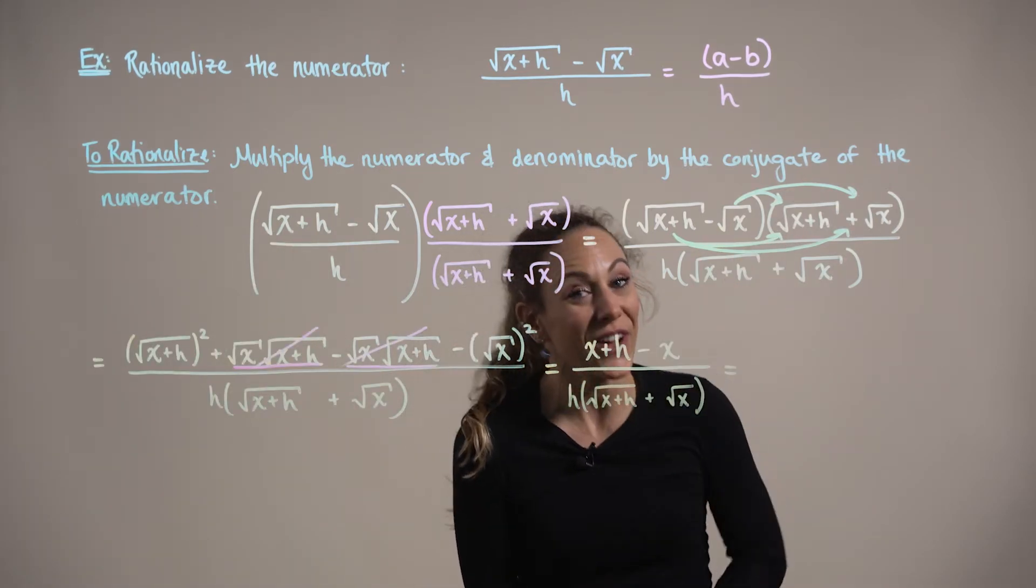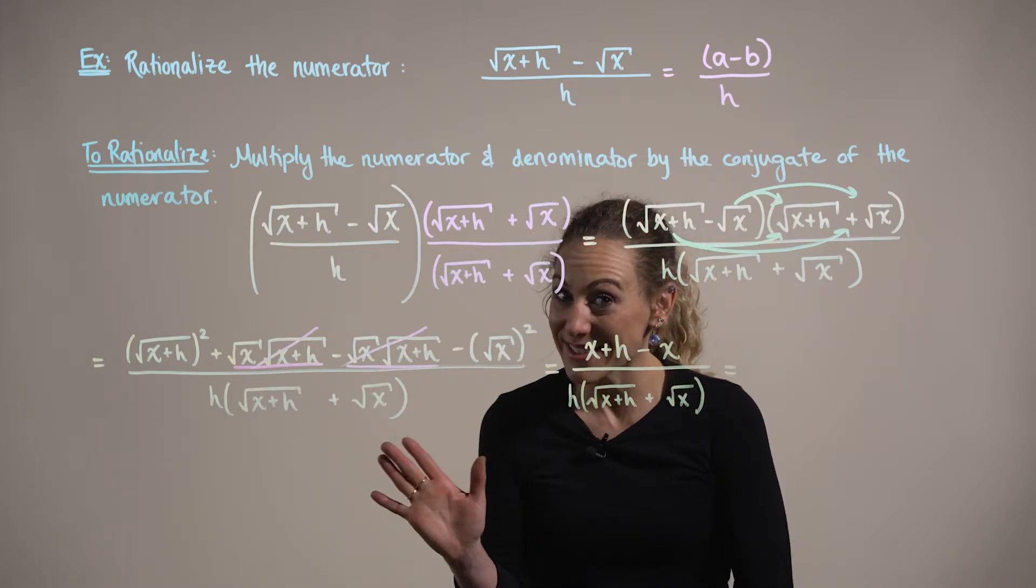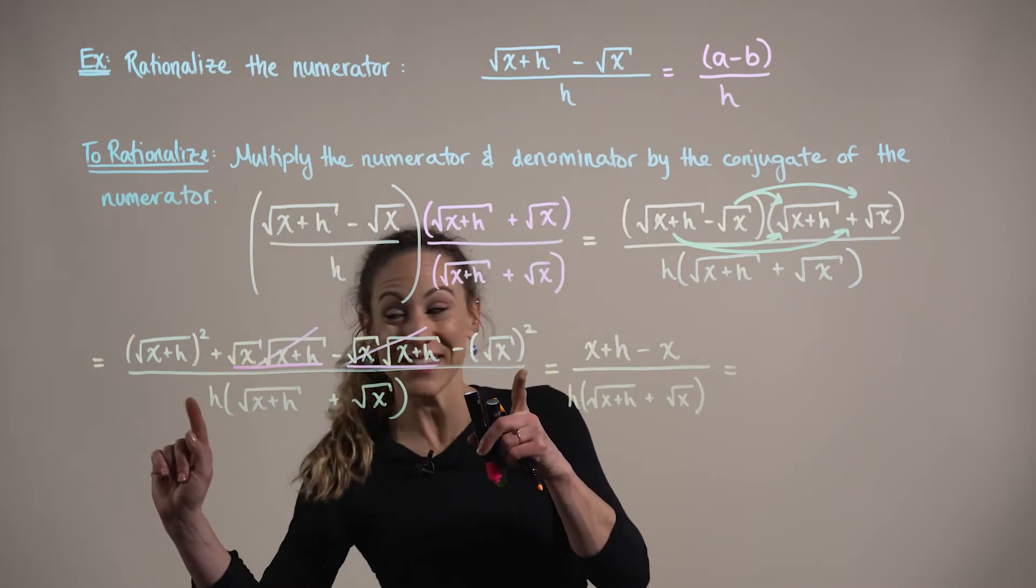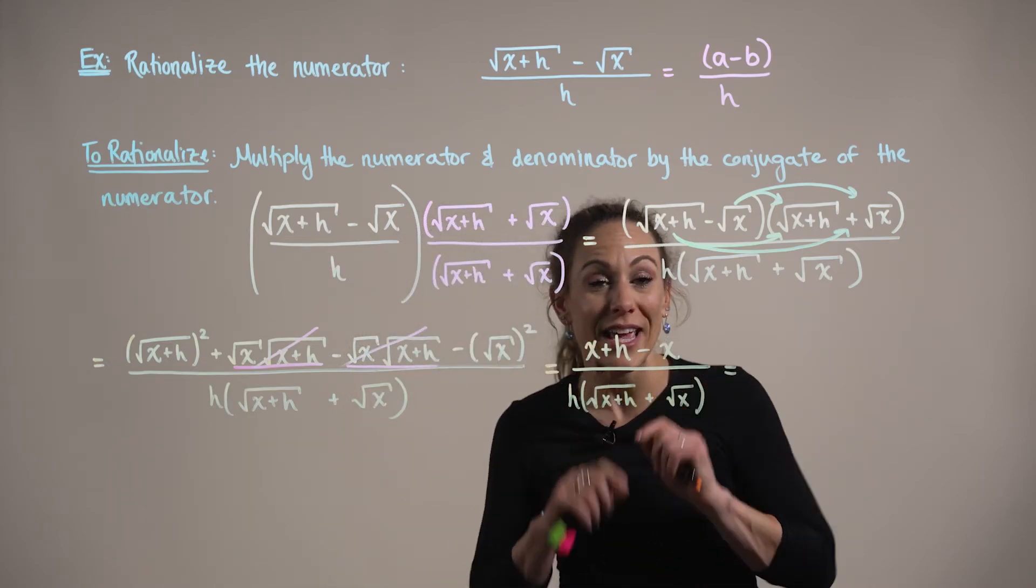In foiling this product of conjugates out, we can see our two middle terms are canceling each other out to zero. And then notice on the outer terms, the first term and the last term, we have the square of the square root, so those are going to be canceled out.